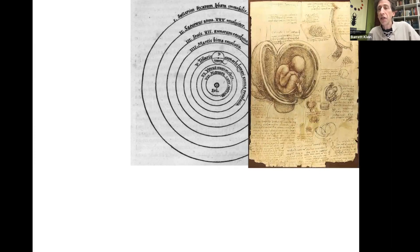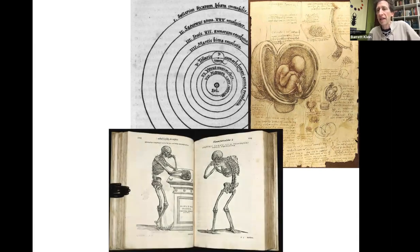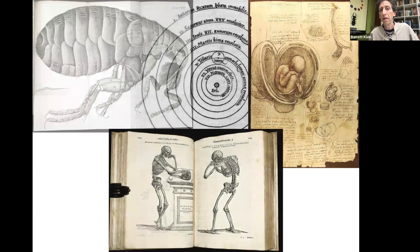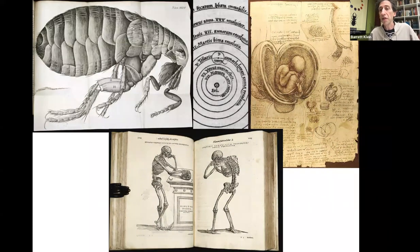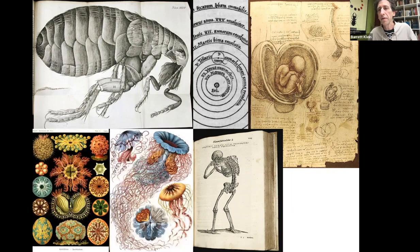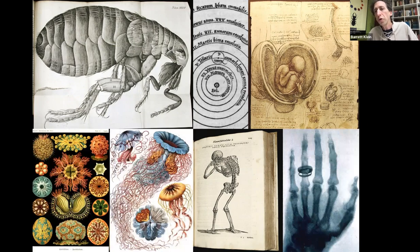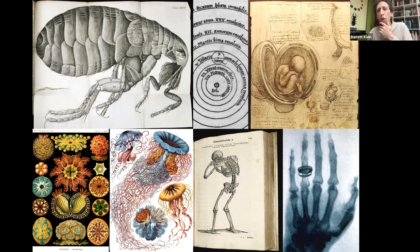Da Vinci changed our thoughts about lunar properties, water properties, and embryonic development. Vesalius produced anatomical illustrations, breaking away from using pig carcasses to understand human anatomy. Then you've got Micrographia, with Robert Hooke's illustrations — here's a flea — which was key during the time of Samuel Pepys' diaries and the black plague. Ernst Haeckel made us view the beauty and diversity of life through visuals. And Röntgen discovered x-rays — there is his wife's hand with a wedding ring — and won the Nobel Prize.